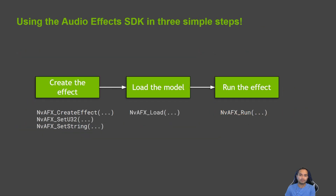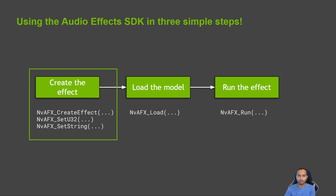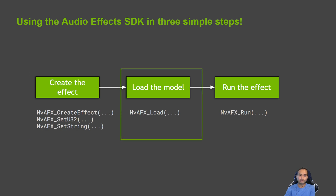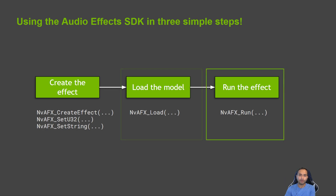Using the API to develop an application like this is a simple three-step process. First, create the effect and set the requisite parameters. Next, load the desired model using the nvafx_load function call. And finally, run the effect on input audio by calling the nvafx_run function.